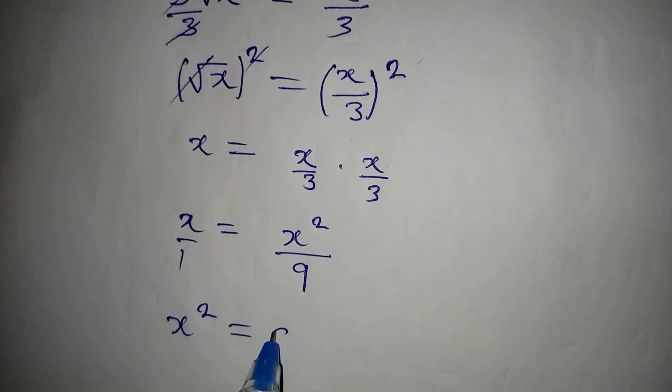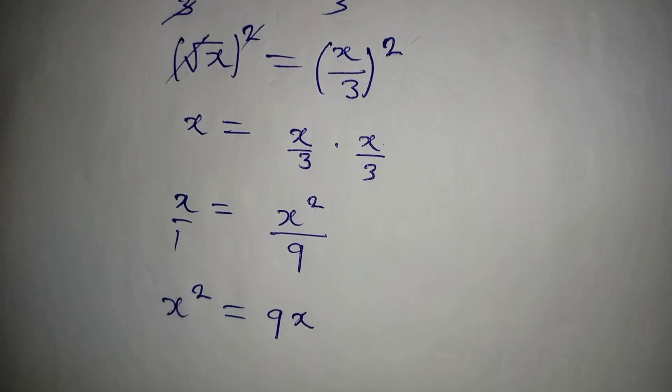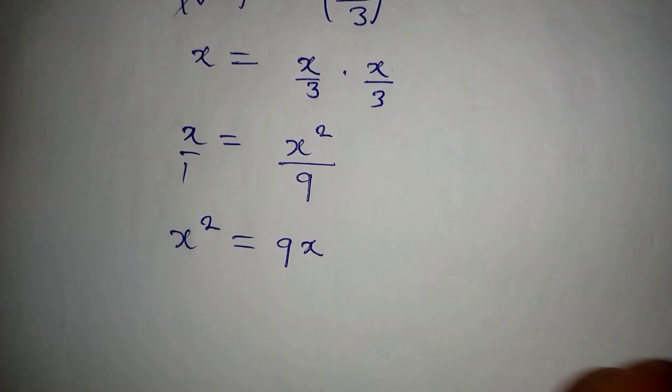But we can bring the value of the term on the right-hand side to the left, so we have x² - 9x = 0.